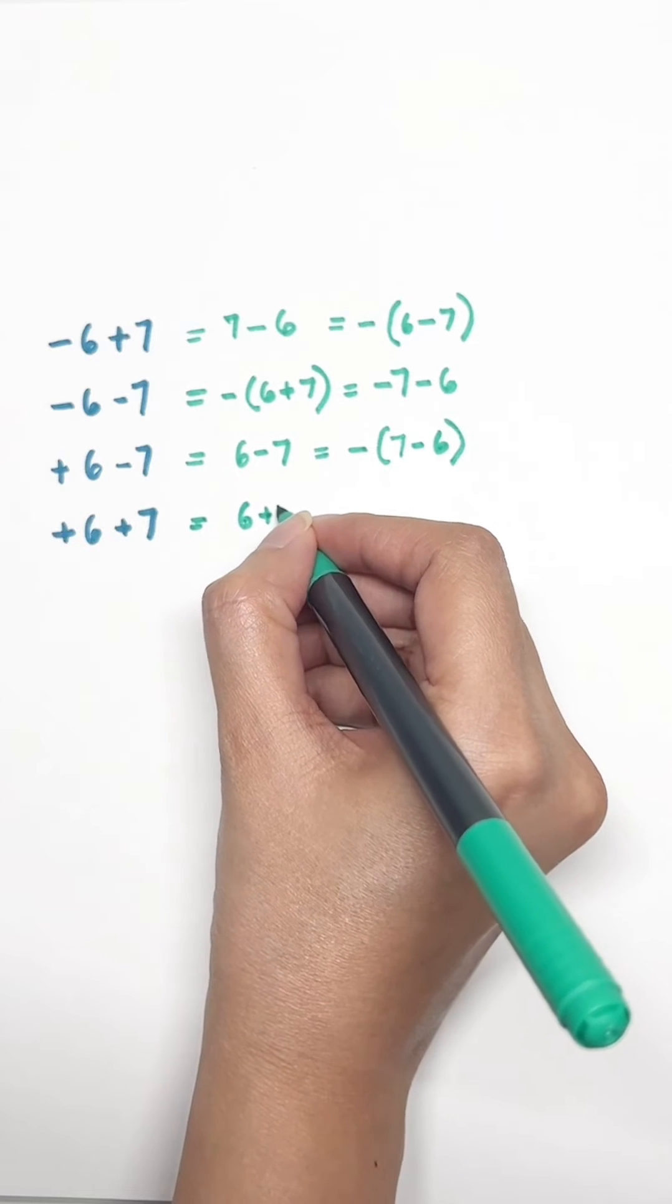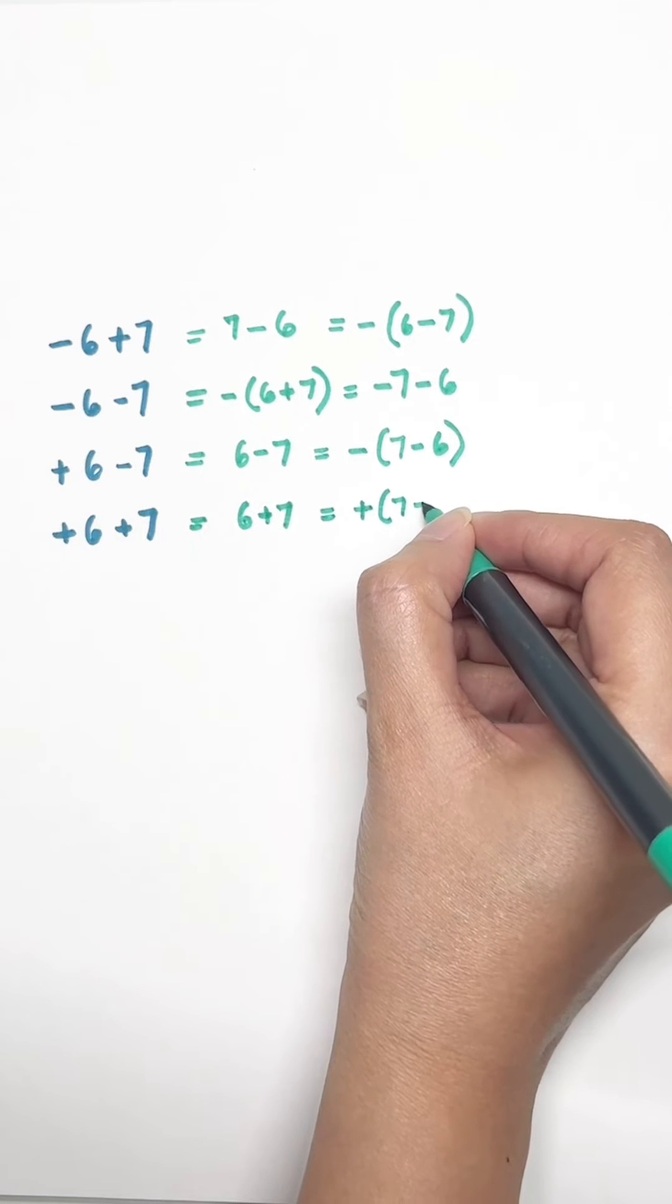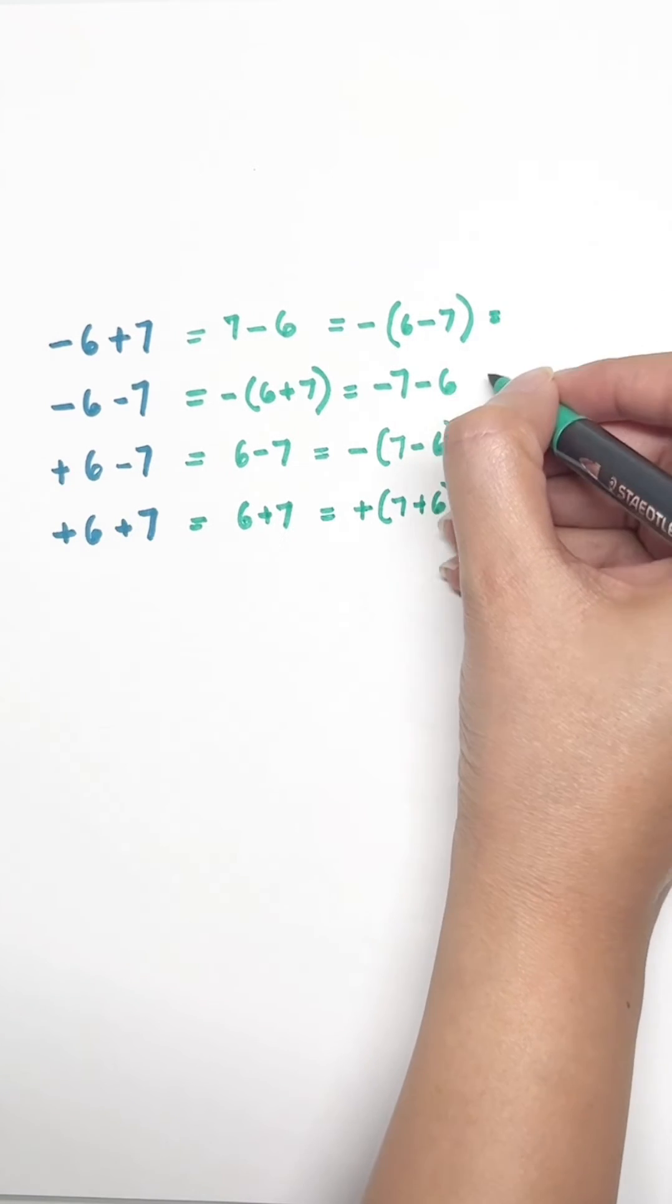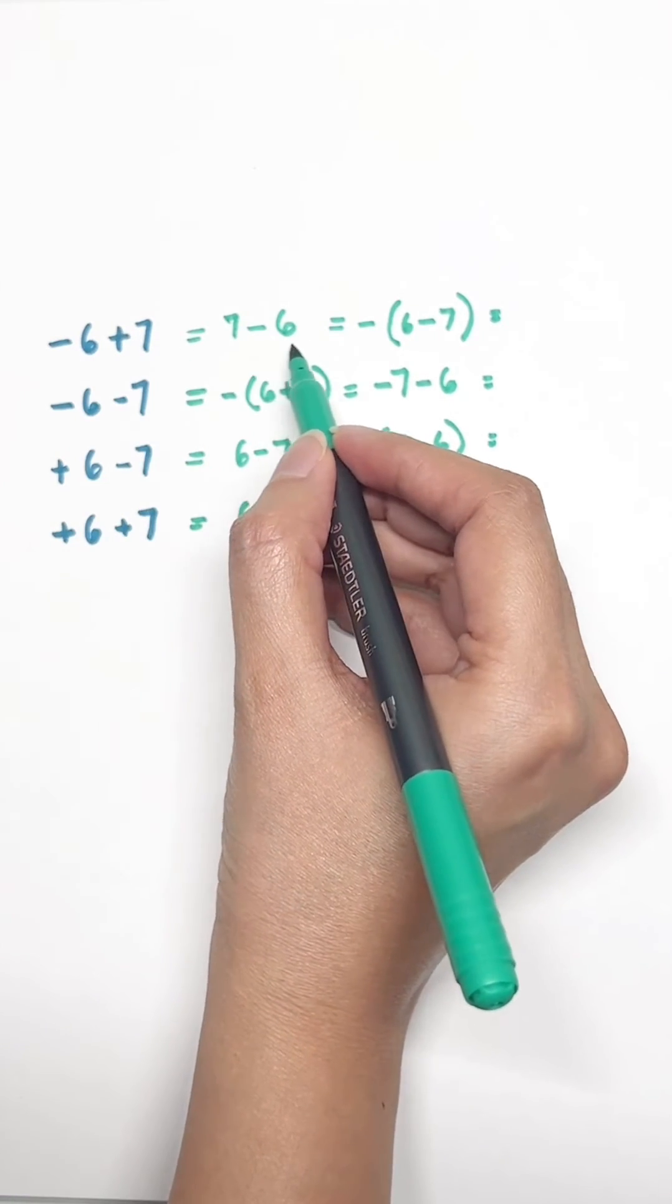And the last one, the easiest one: 6 + 7 is equal to 7 + 6, is equal to plus brackets open 7 + 6 or 6 + 7. Same thing, easiest. Now let's try and solve these.